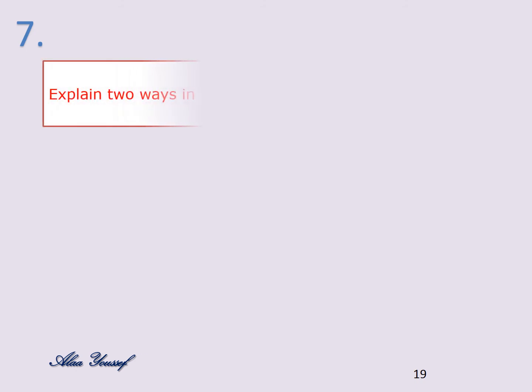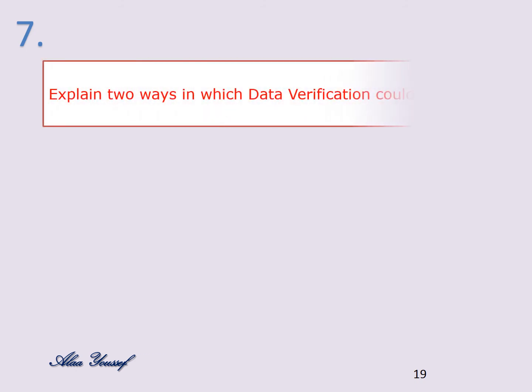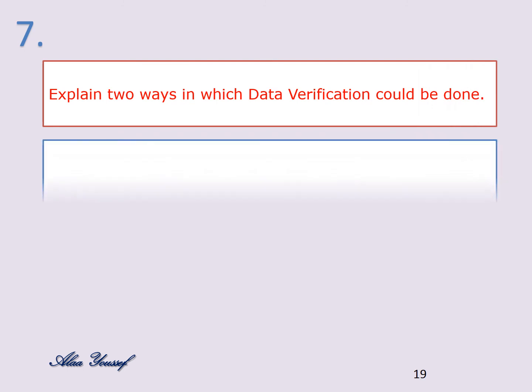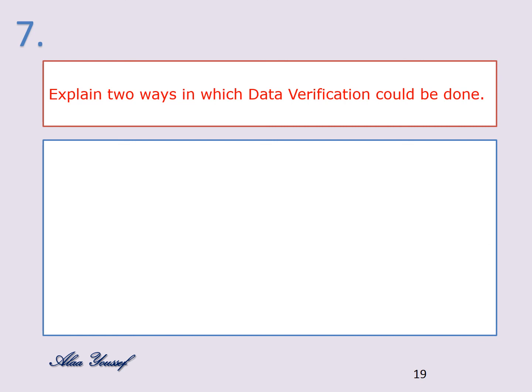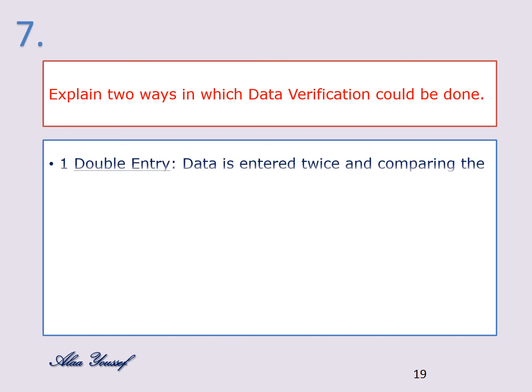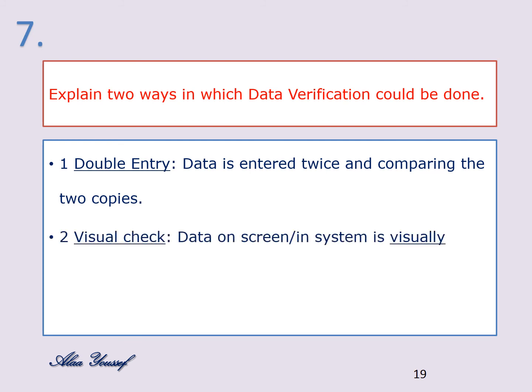Question number seven: explain two ways in which data verification could be done. First, double entry — where data is entered twice and the two copies are compared. Second, visual check — where data on screen is visually compared with that on the data capture form.